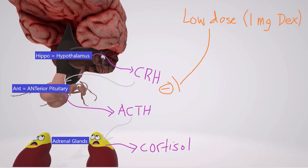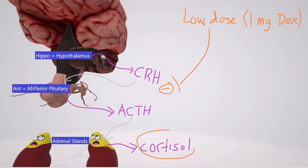Dexamethasone is sort of like cortisol — it blocks the release of CRH and ACTH from the hypothalamus and the anterior pituitary. So in a normal person, 1 mg of dexamethasone will ultimately lead to decreased release of cortisol because CRH and ACTH are down. However, if the person has Cushing syndrome, then 1 mg of dexamethasone is not enough to suppress the cortisol, and thus cortisol levels will be high.